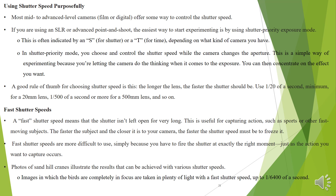You can then concentrate on the effect you want. A good rule of thumb for choosing shutter speed is: the longer the lens, the faster the shutter should be. Use 1/20 of a second minimum for a 20mm lens, 1/500 of a second or more for a 500mm lens, and so on. Fast shutter speed means the shutter is not left open for very long. This is useful for capturing action such as sports or other fast-moving subjects. The faster the subject and the closer it is to your camera, the faster the shutter speed must be to freeze it.